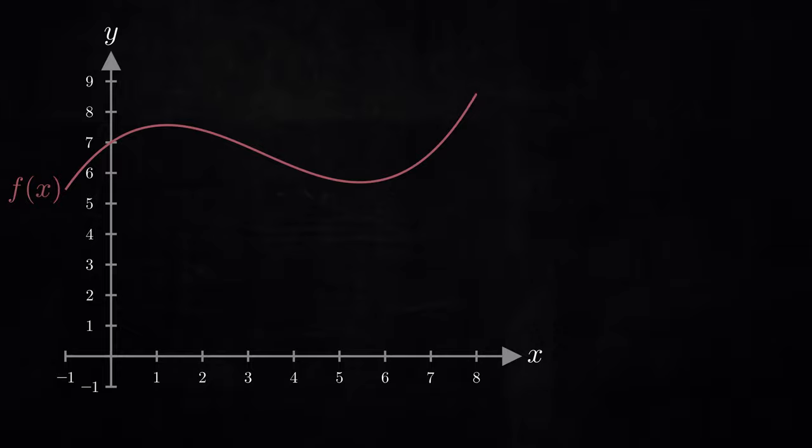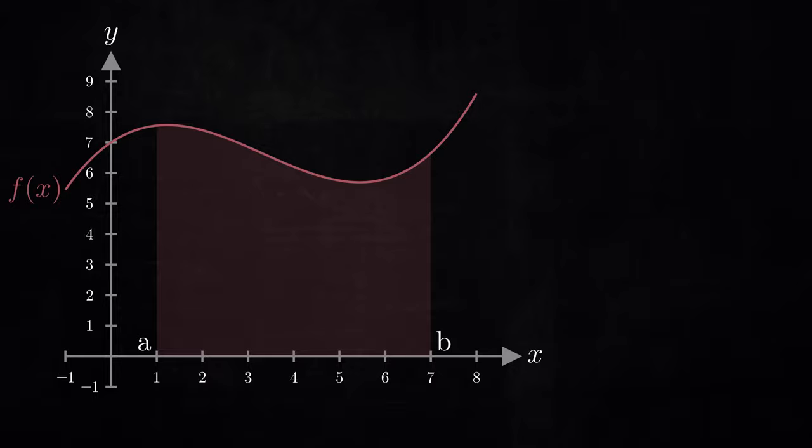Consider the graph of some function f. The area under this graph from say x equals a to b is what the integral of f evaluates to. Let us flip the graph and the area about the axis x equals a plus b over 2, which happens to be the average value of the integral limits.